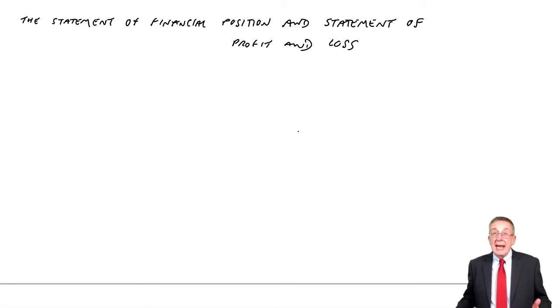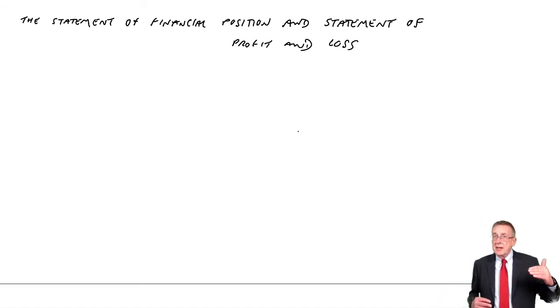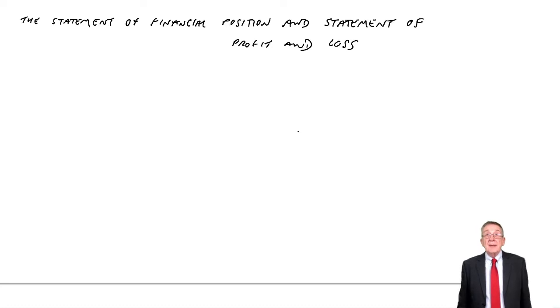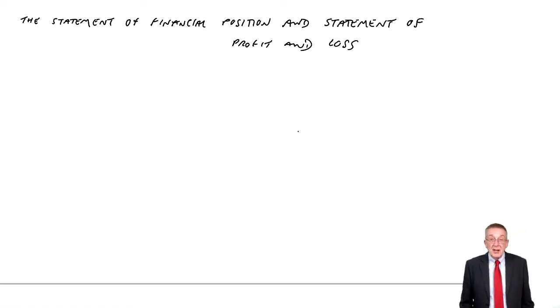In the second lecture, I went through the layout, the pretty layout of a Statement of Financial Position. Remember, the big thing is splitting the assets between non-current and current, and similarly, liabilities, non-current and current. Then in the last lecture, similarly, the layout of the Statement of Profit or Loss, where we're showing how much profit was made during the period.